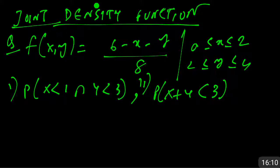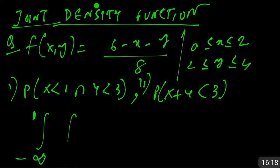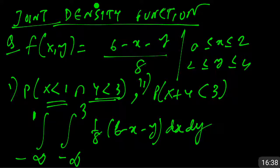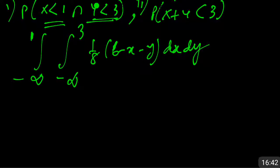For the first question, P(X < 1, Y < 3): since both are less-than conditions, we integrate from minus infinity to 1 for x and minus infinity to 3 for y. If they were greater-than, we would write 1 to infinity. The integral is (1/8) times the double integral of (6 − x − y) dx dy. This is a double integration — inner integral over x, outer over y — where within means inside limit and outside means outside limit.